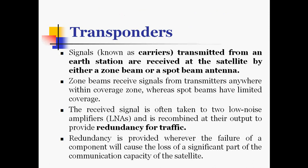Signals transmitted from an earth station are received at the satellite by either a zone beam or a spot beam antenna. Zone beams receive signals from transmitters anywhere within the coverage zone, whereas spot beams have limited coverage. The received signal is often taken to two low noise power amplifiers and recombined at their output to provide redundancy for traffic wherever failure of a component would cause loss of significant communication capacity.